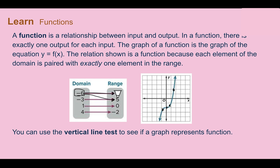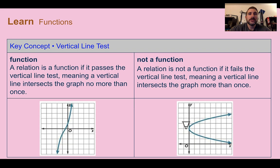If our mapping or coordinates or table shows that the domain is going to more than one thing, this is no longer a function — because you pushed that button and two different things could possibly come out. You can also use what's called the vertical line test to see if a graph represents a function.